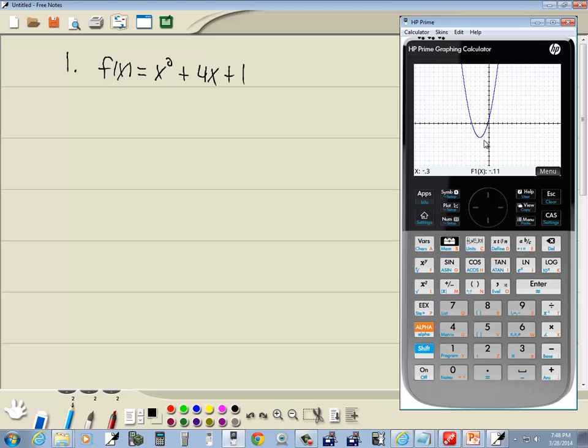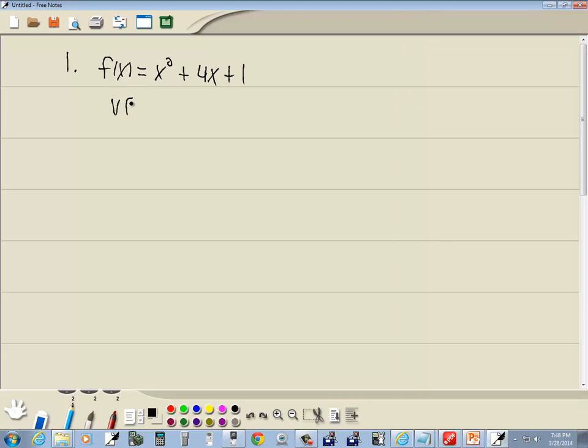Oops, sorry, I hit my microphone. If I press my menu and choose function, you see there's an extremum. I just press the 4 that's in front of it, and that'll choose it. And it comes down and tells us our extremum is (-2, -3), which is our vertex.